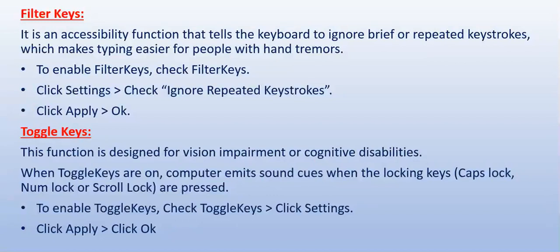The next option in the Keyboard tab is Toggle Keys, also a feature of Microsoft Windows. It is an accessibility function designed for people with vision impairment or cognitive disabilities. When Toggle Keys is turned on, the computer emits sound cues when locking keys like Caps Lock, Num Lock, or Scroll Lock are pressed — a high sound when switched on and a low sound when switched off. To enable Toggle Keys, check 'Use Toggle Keys', click Settings under Toggle Keys, then click Apply and OK.